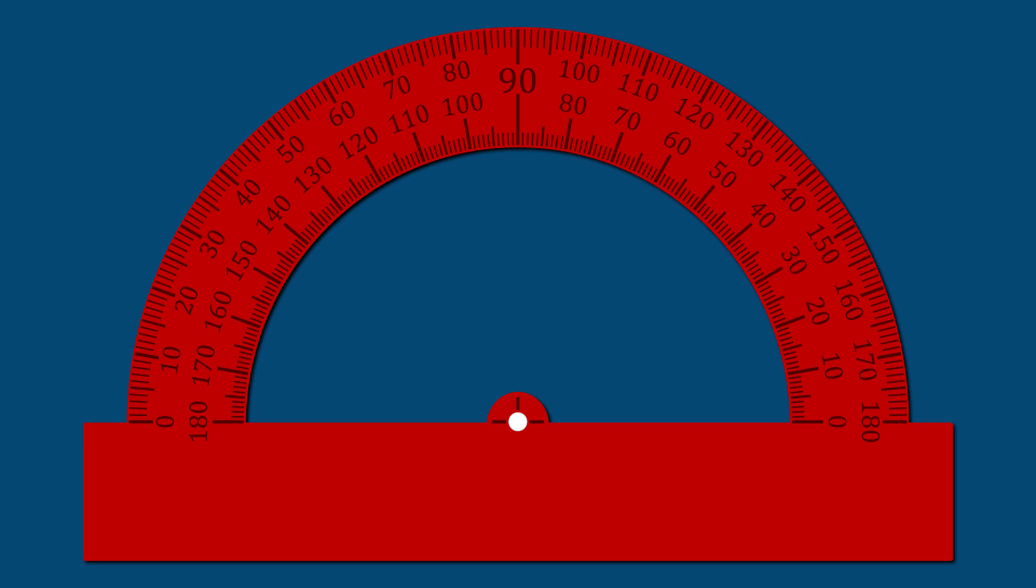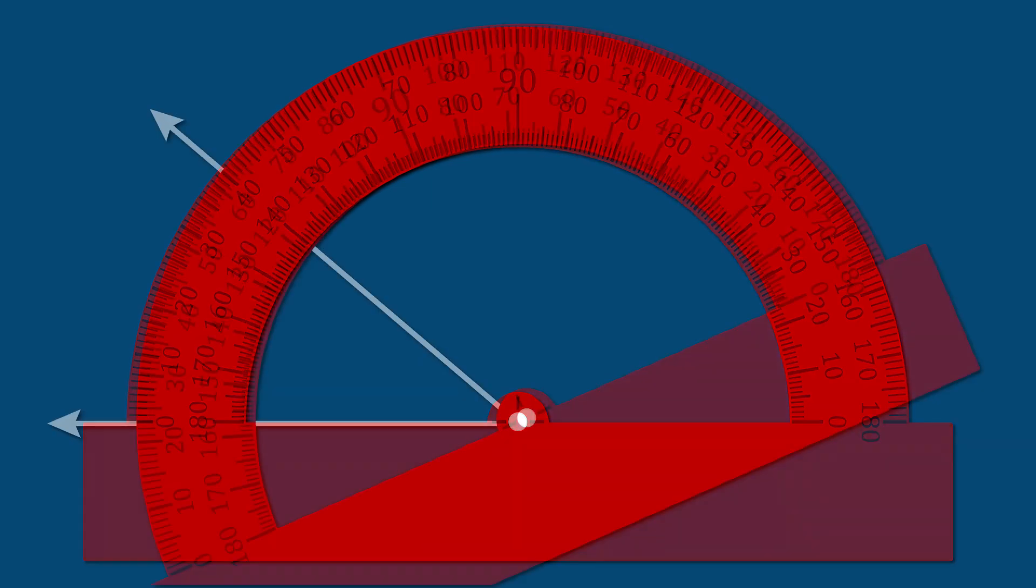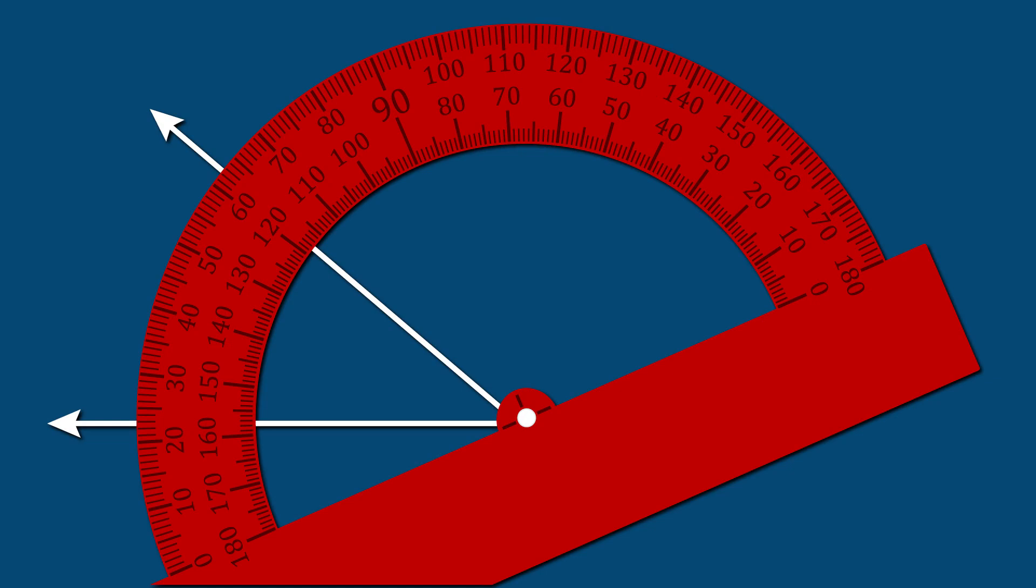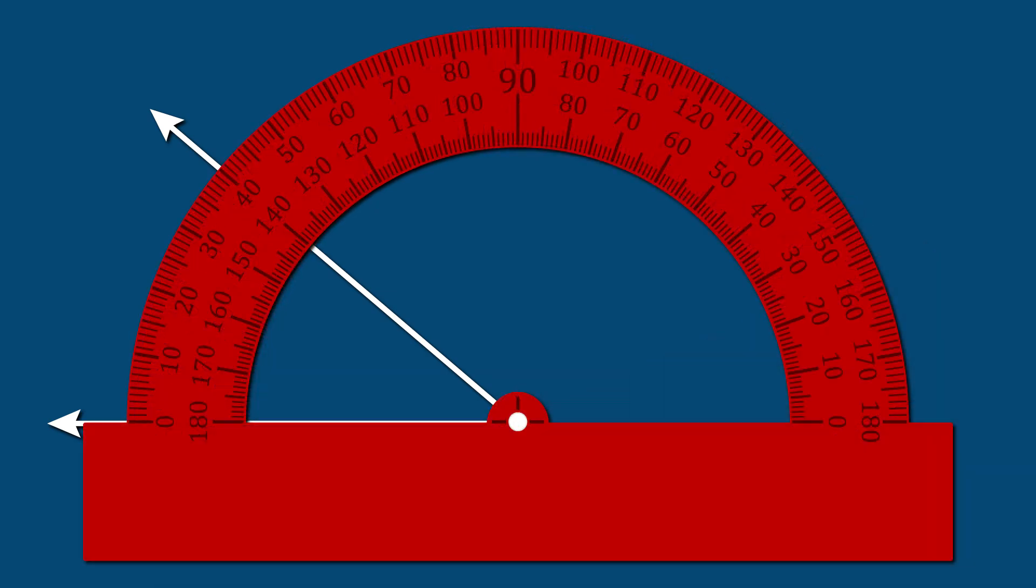Measuring an angle with a protractor is simple. Place the dot near the bottom of the protractor on top of the vertex of the angle being measured. Then, using the baseline on the protractor, align one line of the angle with the zero-degree line in the protractor.